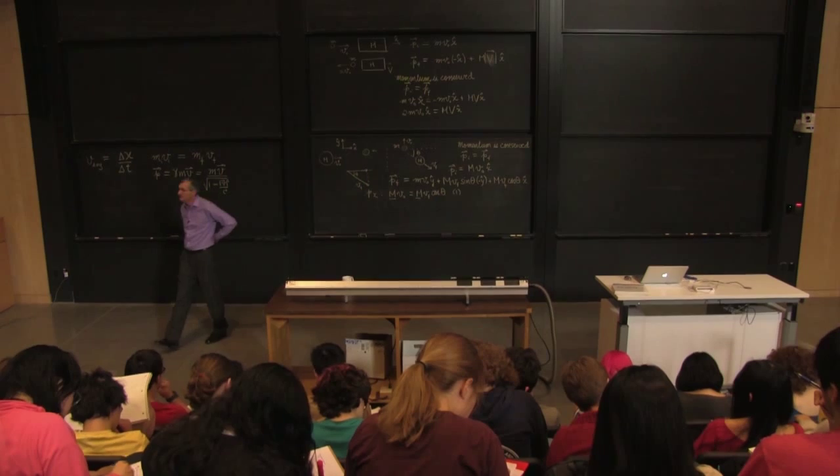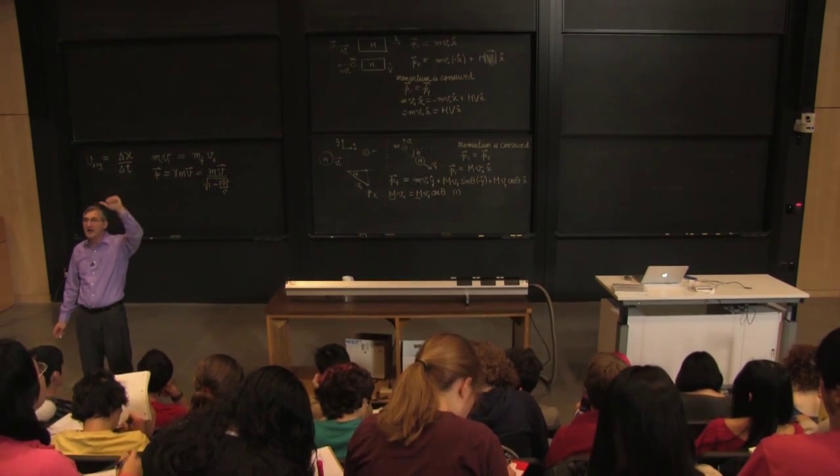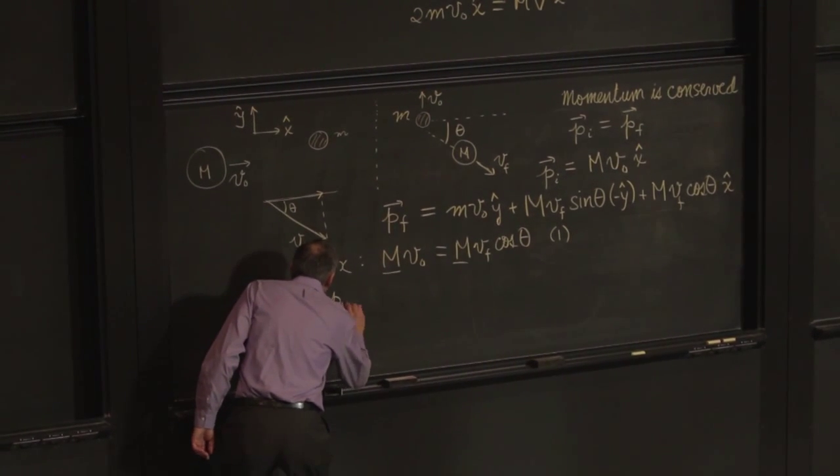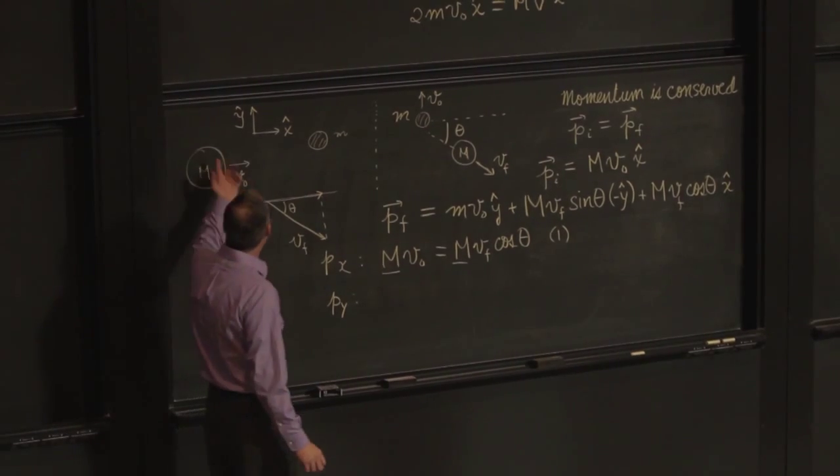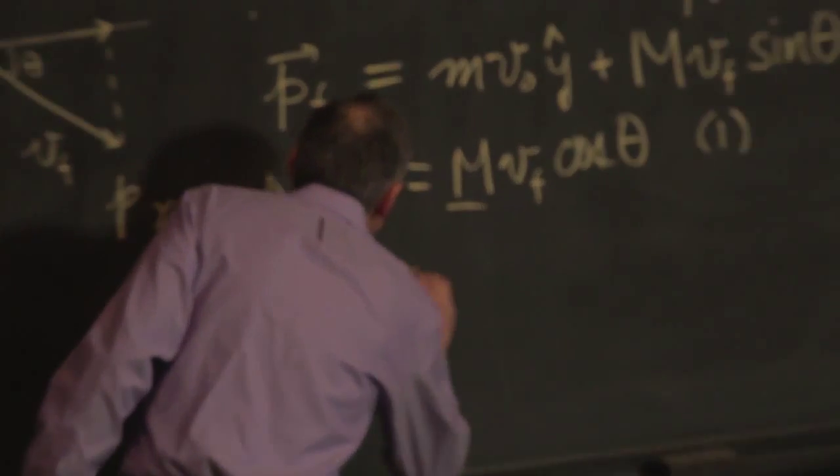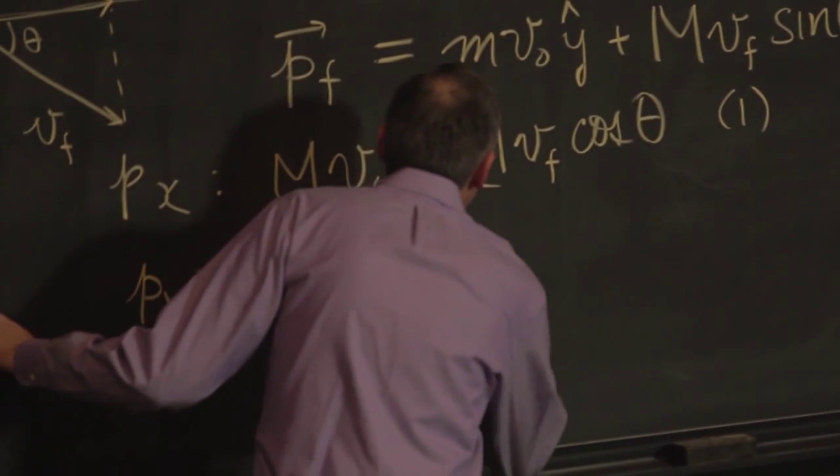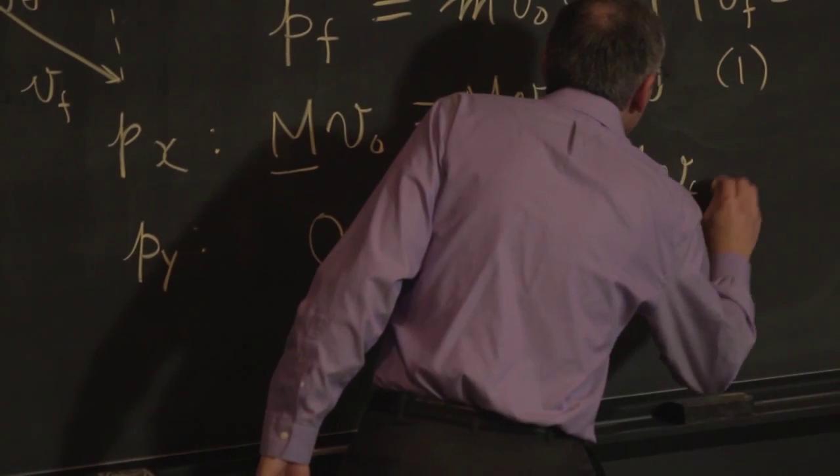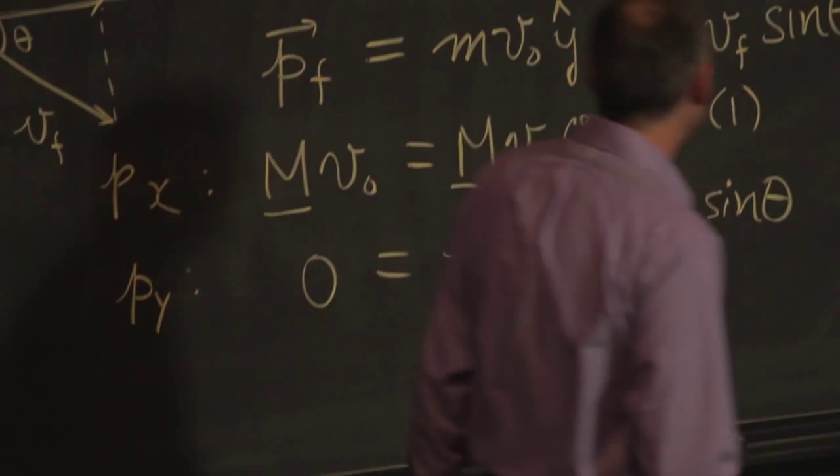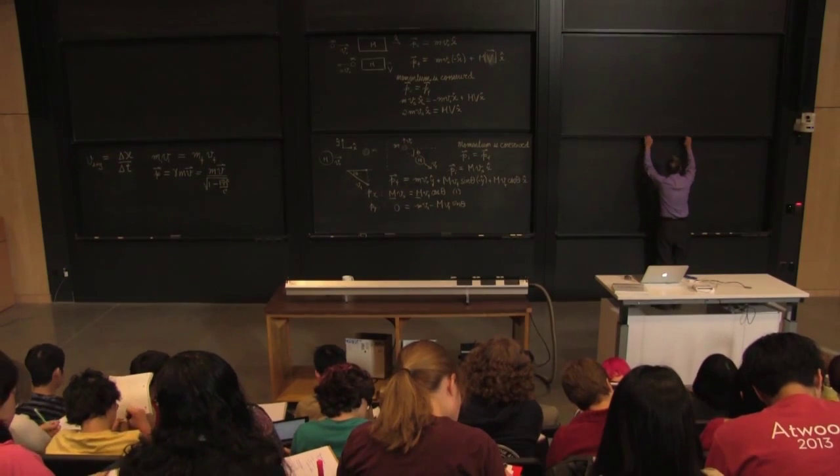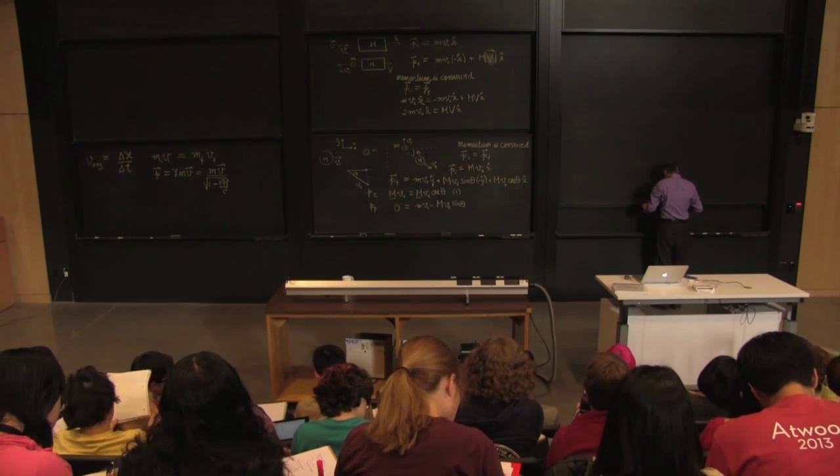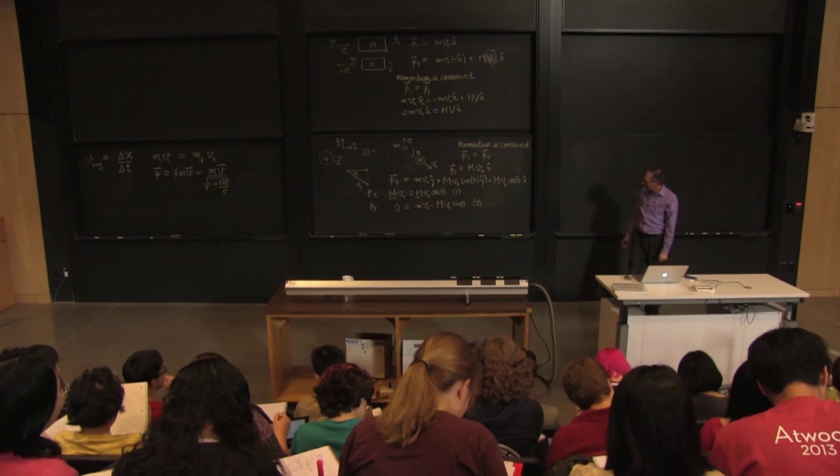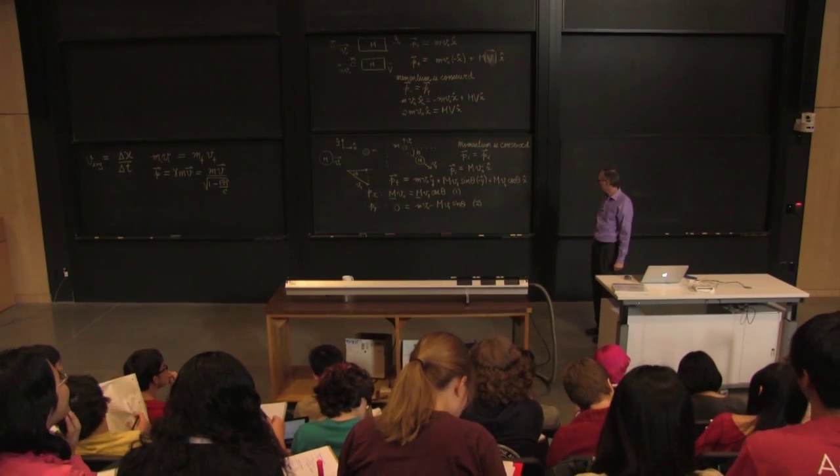How many unknowns do I have? Namely, v final and theta. So I need another equation. The momentum in the y direction, I got nothing in the beginning, so 0 has to equal M v naught minus big M v final sine theta. So that's equation 2, so 2 equations, 2 unknowns, in principle, I should be able to solve.